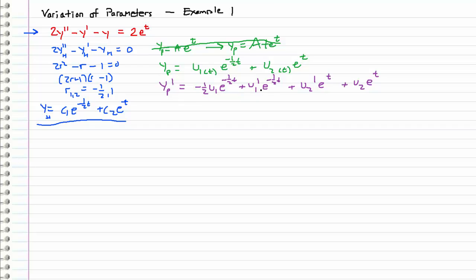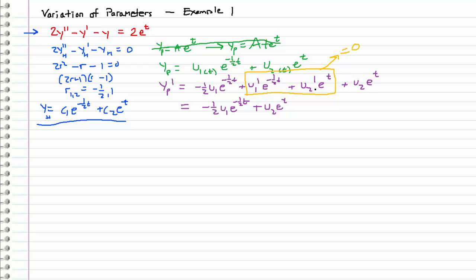There is a very important thing we need to do next, and that is impose a constraint on our problem. In yp prime, we take the two terms that have the primes on them — the u1 prime and u2 prime — and we set their sum to zero. We do this to prevent higher order derivatives from entering the problem, and it is a necessary constraint so that we can actually solve for u1 and u2. So I am going to rewrite yp prime as negative one-half u1 e to the negative one-half t plus u2 times e to the t, keeping in mind that those prime terms sum to zero.